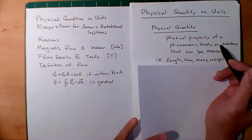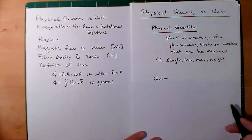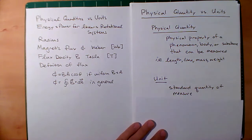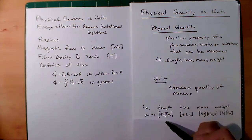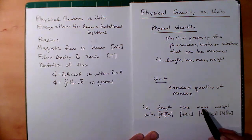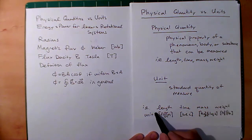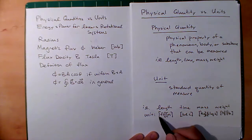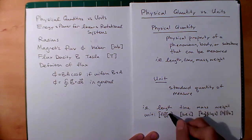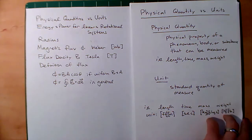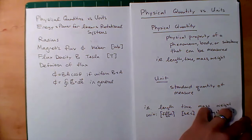Now the unit — the difference is, of course, the standard for that measurement, the standard quantity. So for length we have feet, meters, inches, centimeters; seconds for time; kilogram slugs for mass; newtons and pounds for weight. These are just examples of units for the physical quantities. I like to put brackets around the symbol for the units so I know the difference between that and the symbol for the physical quantity.